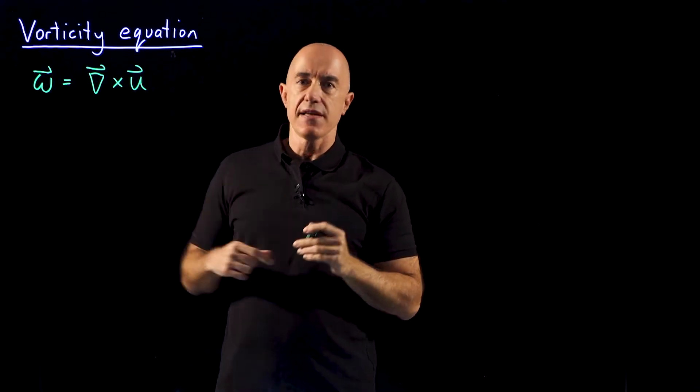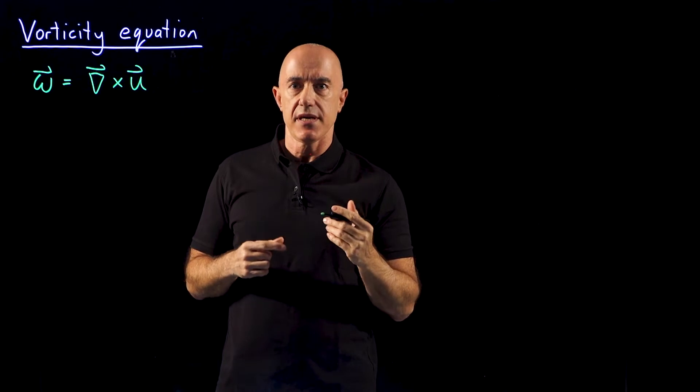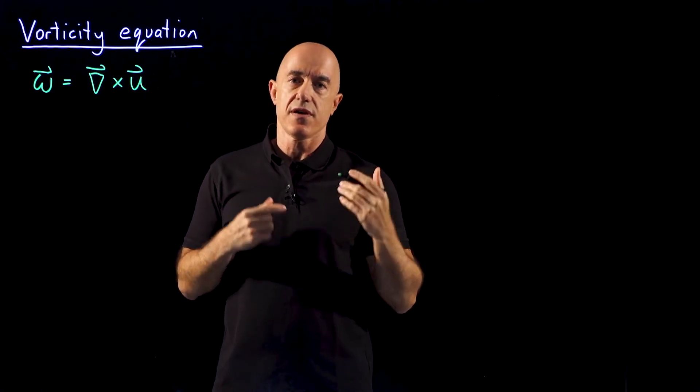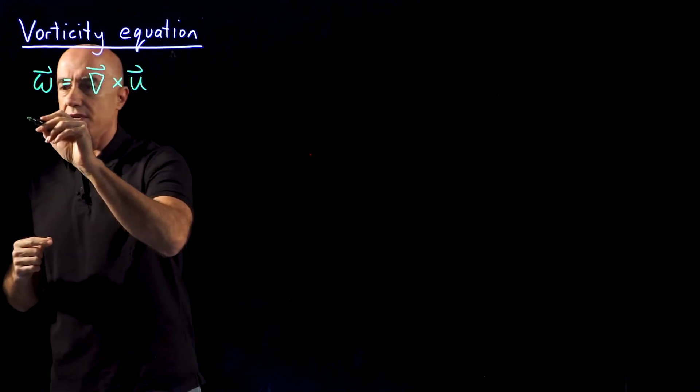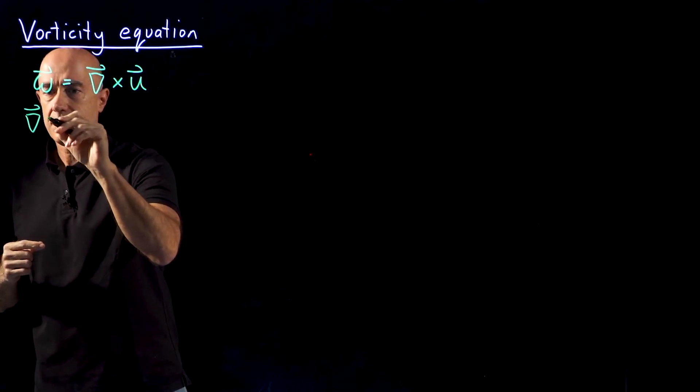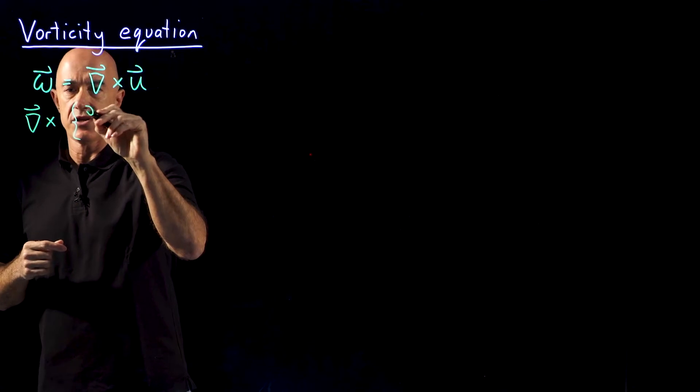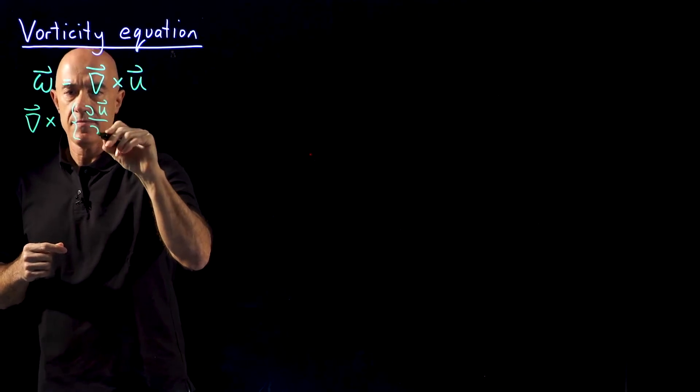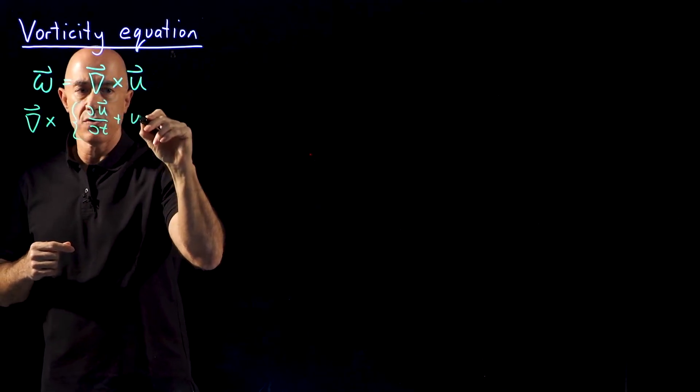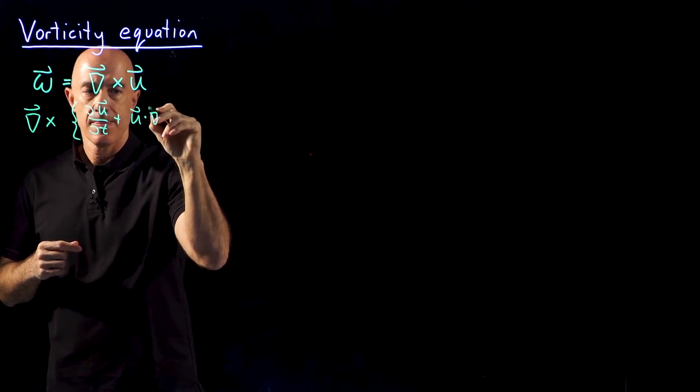So in order to find the equation for the vorticity, we need to take the curl of the Navier-Stokes equations. So we're going to take the curl of the left-hand side of the Navier-Stokes equation, which is du dt plus u dot del u.